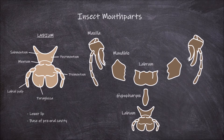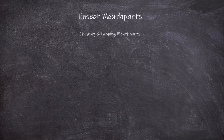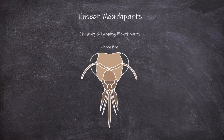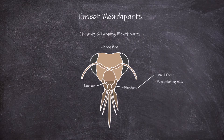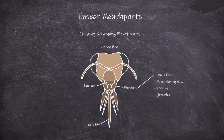One type of mouthparts that are different are those specialised for chewing and lapping. An example of an insect that exhibits this feeding mode is the honeybee. In mouthparts specialised for chewing and lapping, the labrum and mandibles remain similar to those used for just chewing. The mandibles function in manipulating wax and other materials involved in building a nest or hive, and can be used for a variety of other functions such as feeding others and grooming. What has changed is that parts of the maxilla and labium are modified to form a lapping tongue. The glossae of each labium are elongated and fused to form a hairy tongue.